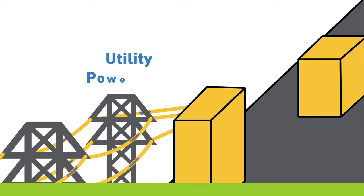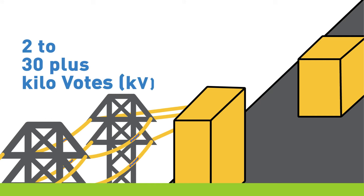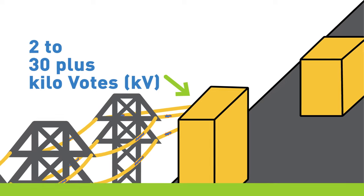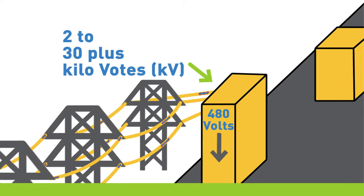We'll start with the utility feed. Power coming from the utility distribution substation can range from 2 to 30 plus kilovolts. Since the power entering the building is generally 480 volts, there has to be a transformer that can reduce the voltage down to 480 volts.